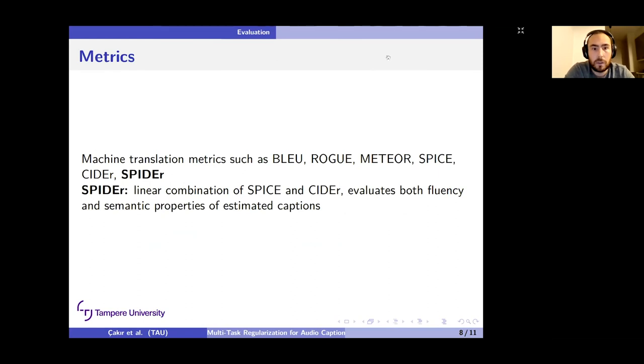We are using the official metrics of the challenge. These are BLEU, ROUGE, METEOR, SPICE, CIDEr, and SPIDEr. These are quite common metrics that have already been used in image captioning extensively. In this work, we also focus on SPIDEr metric, which is the linear combination of SPICE and CIDEr. It evaluates both fluency and semantic properties of the estimated captions, both grammatical correctness and the information richness of the estimated captions.